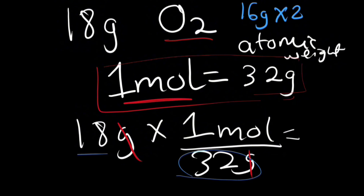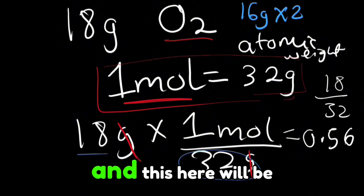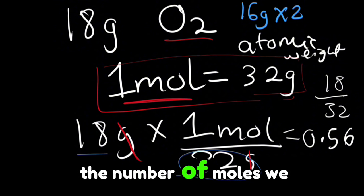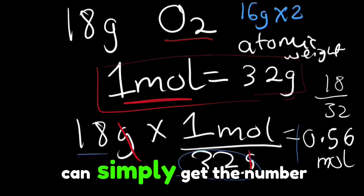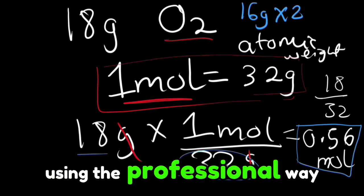You will have here an answer of 18 divided by 32 which will finally give us 0.56 approximately and this here will be the number of moles we got. And that is how you can simply get the number of moles using the professional way.